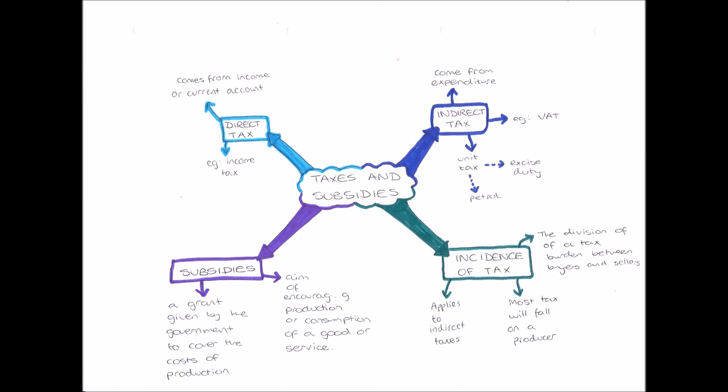Next we have indirect taxes. Indirect taxes are taxes that come from expenditure. So whenever you buy a good, you are taxed on buying that. An example would be VAT. Every time you buy a good, a percentage of the price of that good is going to the government as an indirect tax.